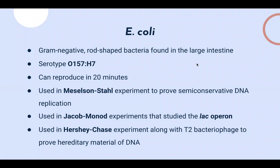First, I'm going to talk about E. coli. E. coli is a gram-negative and rod-shaped bacteria that is naturally found in the large intestine, and it is a common cause of food poisoning, especially in undercooked meat and beef specifically. Its serotype is O157:H7, and a serotype is basically just a specific classification that helps distinguish between different microorganisms. That serotype O157:H7 is a common clue that comes up for E. coli.